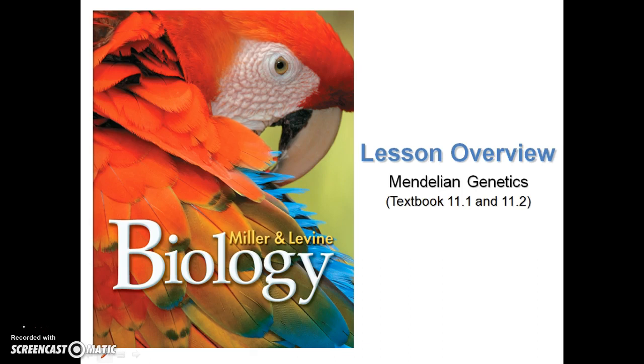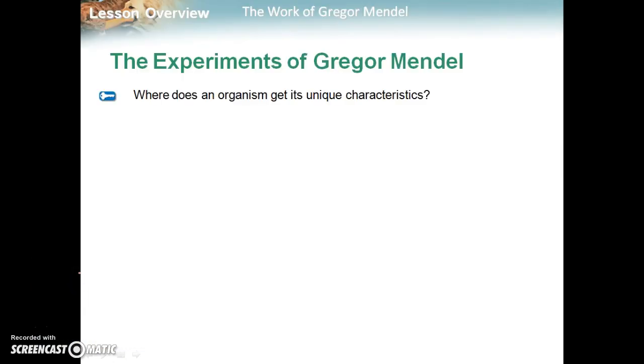So the first question we're going to look at is where does an organism get its unique characteristics? And we all know that genes are passed down from one organism to another. So genes passed from generation to generation, and we call this study of heredity genetics.